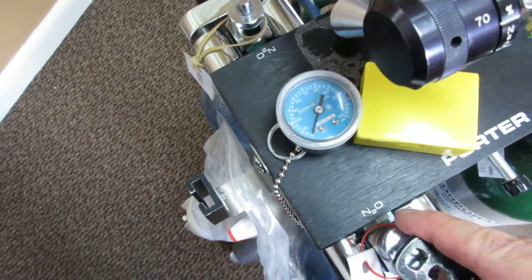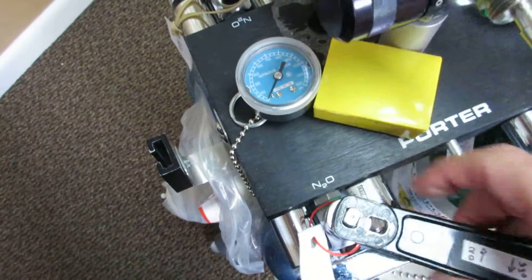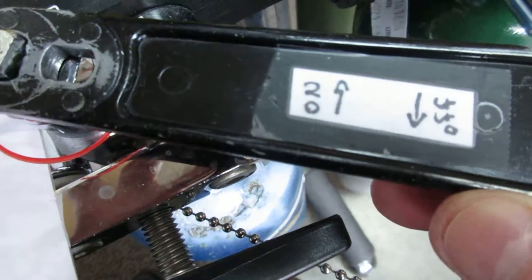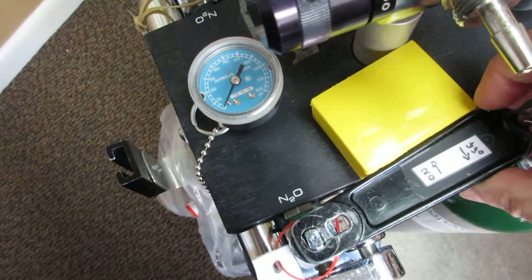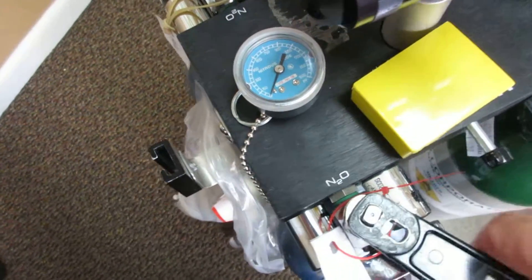I already checked that manually. So now we can take this tank over here, turn it on. Righty-tighty, lefty-loosey. And notice I even made a little diagram. Push it around, gauge does not move. That tank is empty.